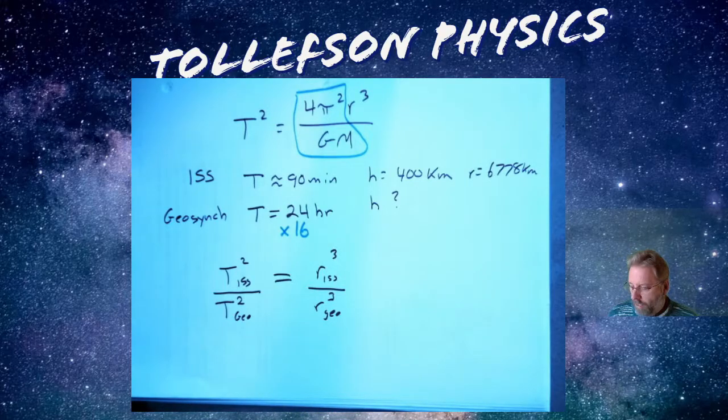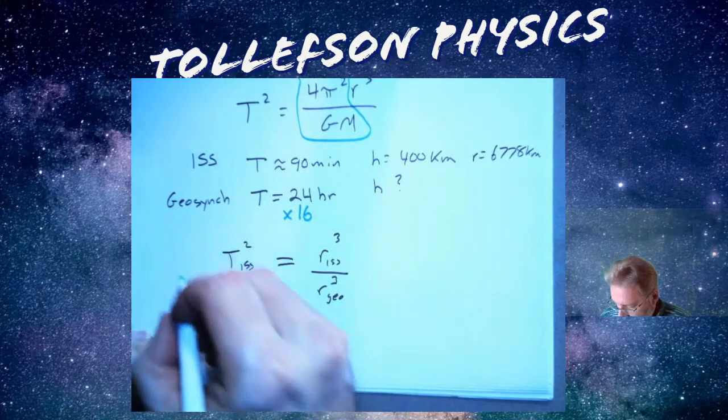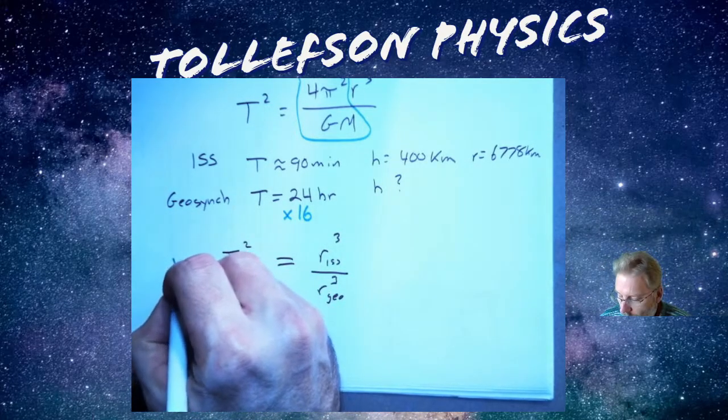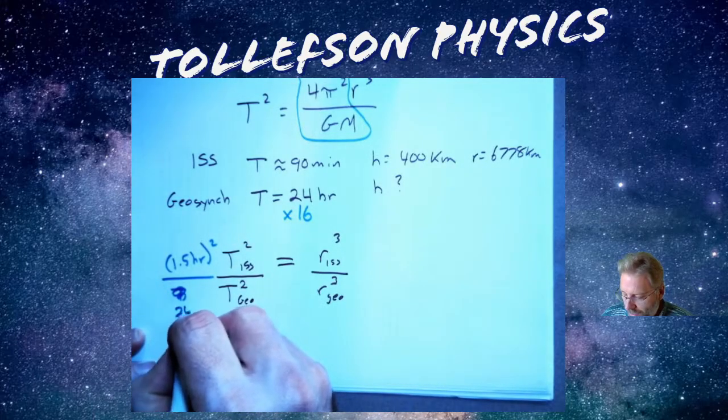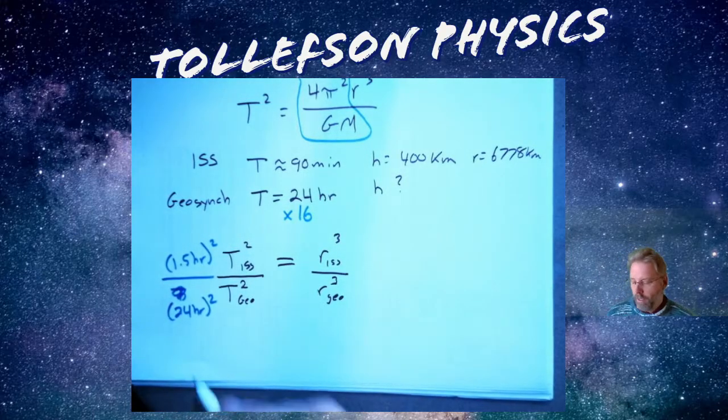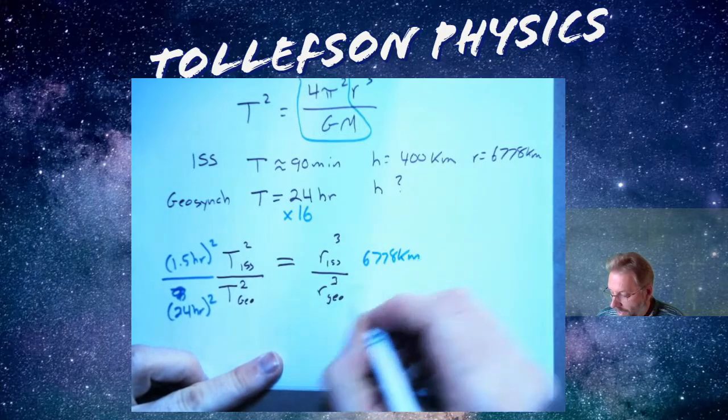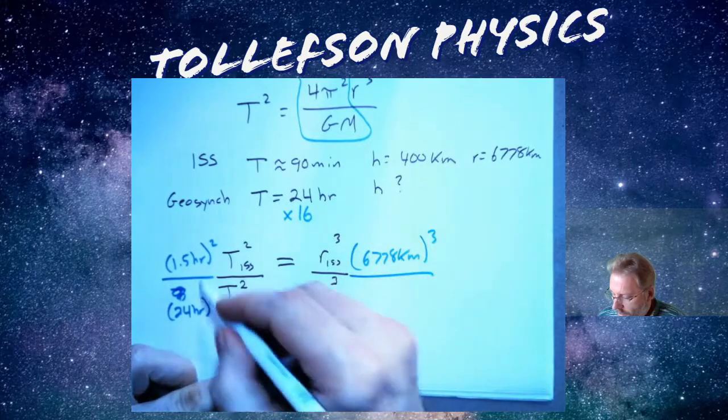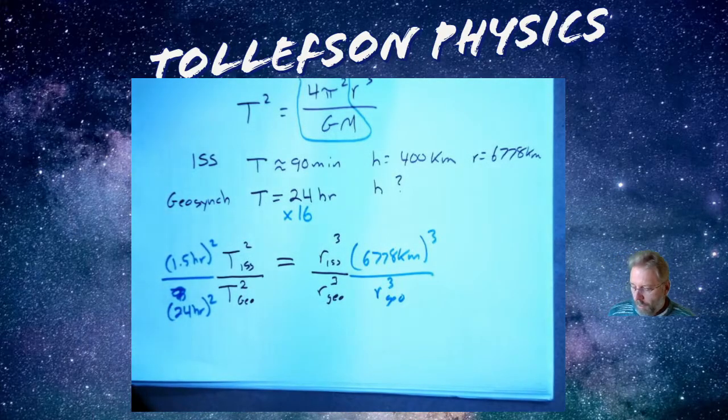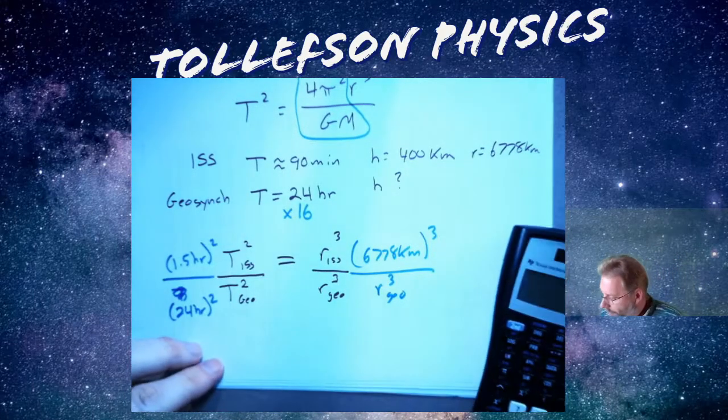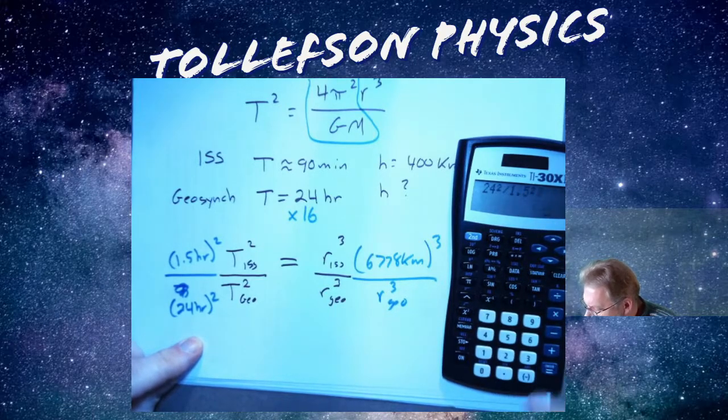So what can I do to actually answer my question? So I'm going to write it in hours because I can actually. So 1.5 hours is the period squared. I do know that it's 24 hours squared for a geosynchronous satellite. I know that r is 6,778 kilometers. And I actually can do this not in SI units because they cancel out. And I don't care about all that stuff in the middle. So this will equal r cubed of the geo. So 24 squared divided by 1.5 squared is the reciprocal of this. So it's 1 divided by 256. So this ends up being 1 divided by 256. This means this has to be 256 times bigger than that.